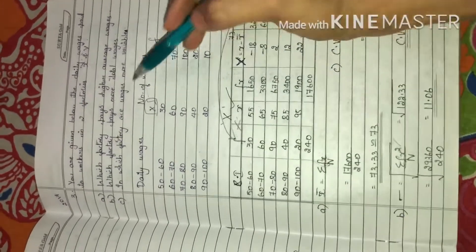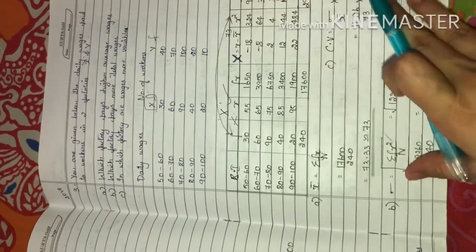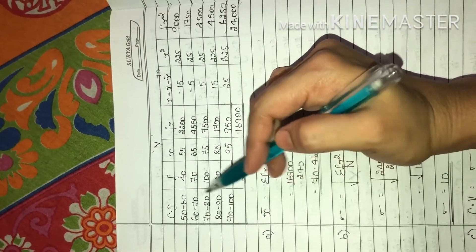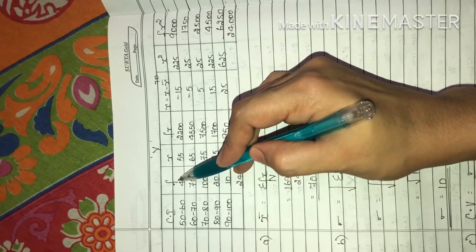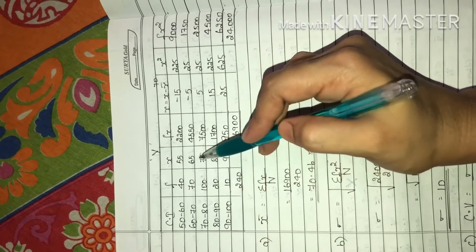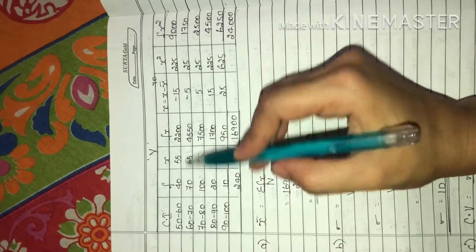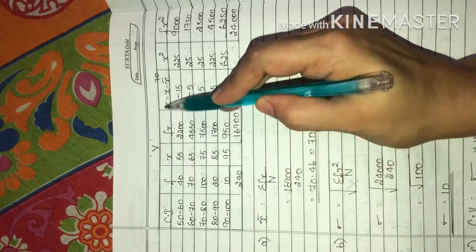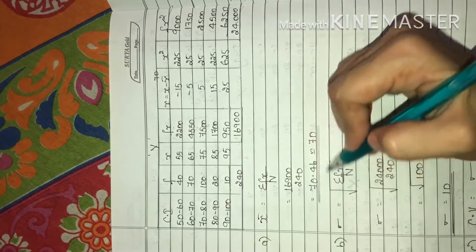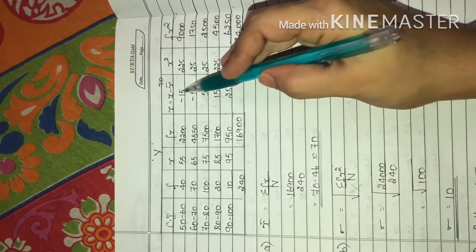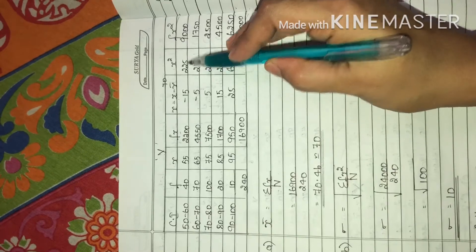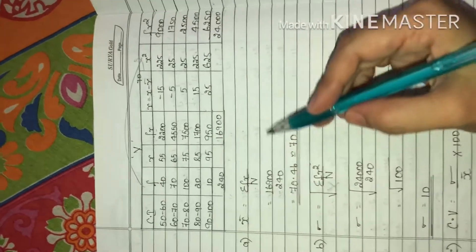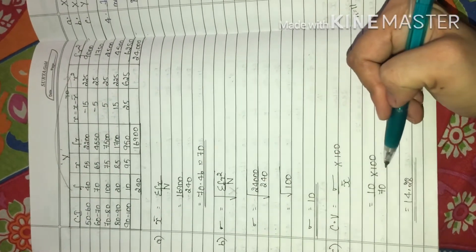The same calculation should be done for Factory Y. The class interval stays the same — only the frequency changes. Write down the frequency for Y company, then identify the mid value X, calculate FX, identify the mean, then calculate capital X, X-square, and FX-square. Simplify the formula the same way as for Factory X to get the standard deviation and CV for Y.